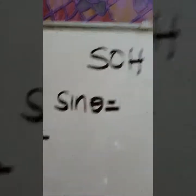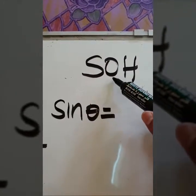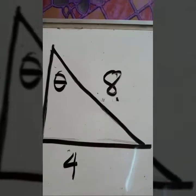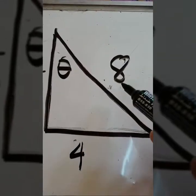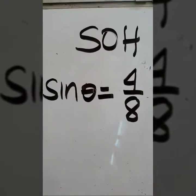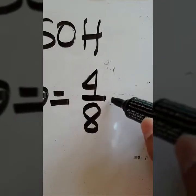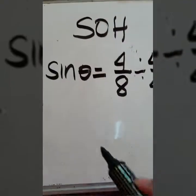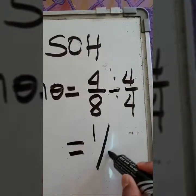Let's solve for sine theta. Using SOH, sine theta equals opposite over hypotenuse. The opposite side is 4 and the hypotenuse is 8. So sine theta equals 4 over 8. Since 4 over 8 is divisible by 4, our answer is sine theta equals 1 half.